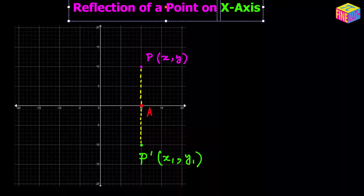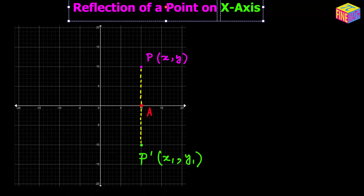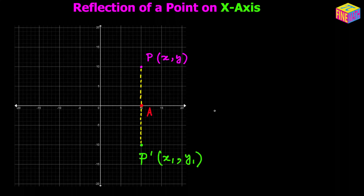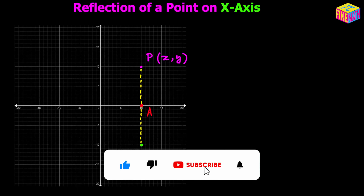We are taking the reflection on the x-axis of the original point P and getting an image at P prime, shown as a green dot. Because we are talking about reflection, we recall from physics the concept of reflection of light: the x-axis acts like a mirror. The object is our original point P, and the image is the reflected point P prime.